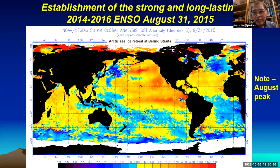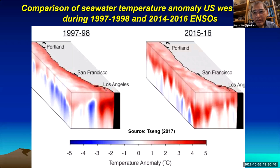By the end of August 2015, you can see the strong ENSO being established in the proper location. The only problem is it's in August 2015, not at Christmas time or December 2015. Comparing the hot water with the 1997-1998 ENSO — which is also quite strong — the 2014 to 2016 ENSO is much more severe in terms of the warm water's extent.